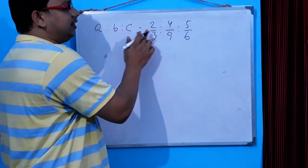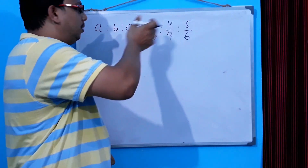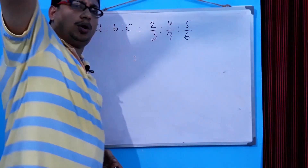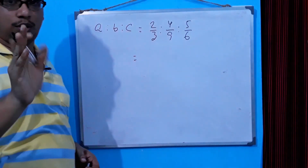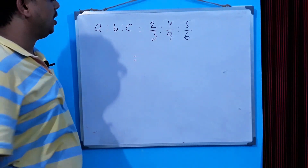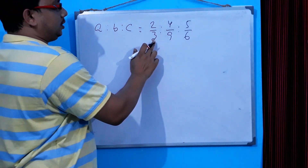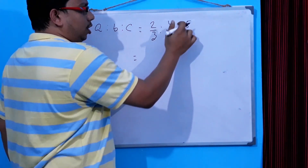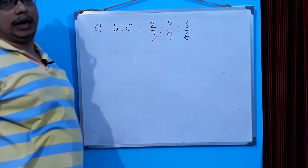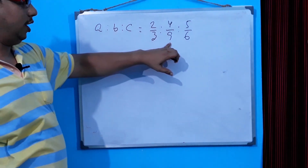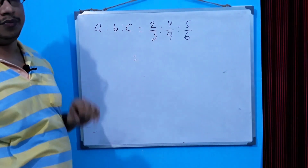You can say a, b, c, d, e, f. I'll give you a question. Three, nine, and six.